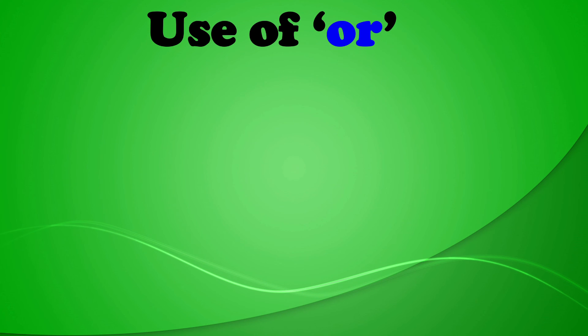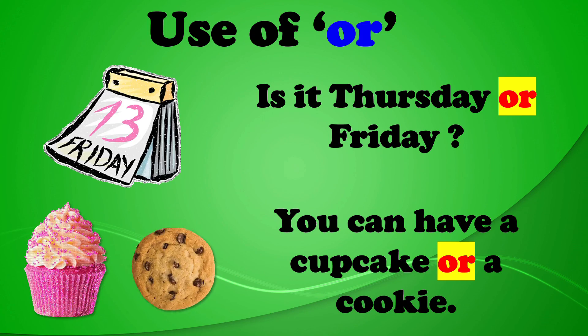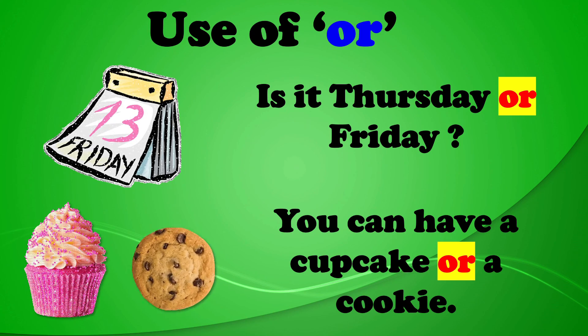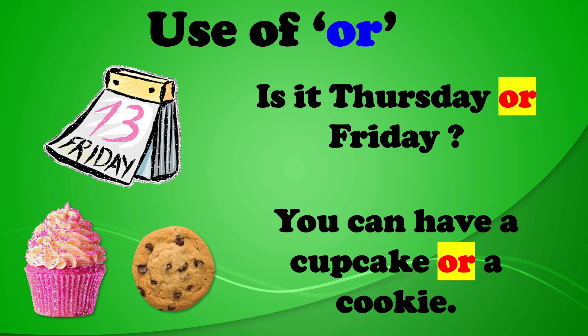Let us take a few more examples to understand the use of OR. Is it Thursday or Friday? In this sentence, conjunction OR is used as one has to decide whether it is Thursday or Friday. You can have a cupcake or a cookie. In this sentence again, one has to decide whether she or he wants a cupcake or a cookie. There are two options and we have to decide for one.